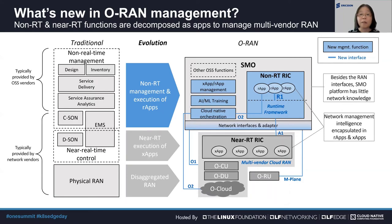A new set of application management functions are introduced, as well as the non-real-time radio intelligent controller, or non-RT RIC, sitting inside of the SMO as the runtime execution environment for the RApps. So now you can see there are two key differences between the old and the new world of O-RAN. First is separation of the management platform — SMO and RIC — versus the applications — XApps and RApps. Second is separation of near-real-time control applications, the XApps, versus the non-real-time management applications, the RApps. O-RAN is the entity to define the standard open interfaces between all the elements in this architecture.